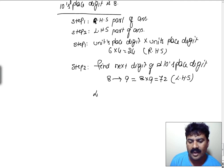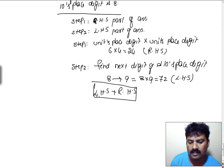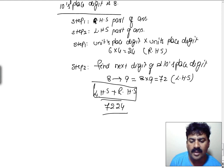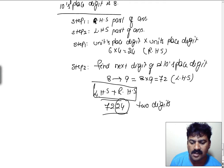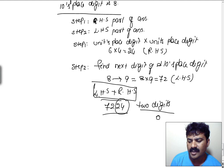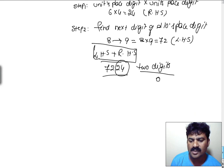Now, LHS part and RHS part must be combined and written together. So it is 7224 — that is the answer. Remember that the rightmost answer must be of 2 digits. If we are unable to find 2 digits, then we need to append 0.